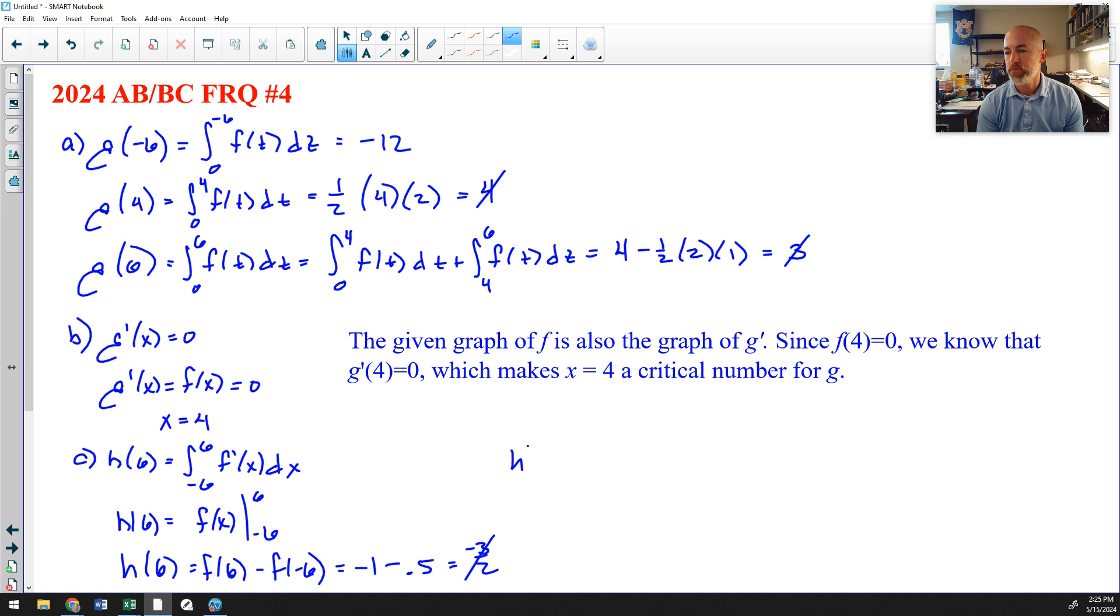On to H prime of six. First, I need H prime of X, which would be, you do the integral, use the fundamental theorem of calculus, and the derivative of H of X, you substitute the X in for the T times the derivative of what you substituted. You always multiply by the derivative of what replaces the T when you do that derivative of an integral defined function. And so that means H prime of six is going to be F prime of six. F prime of six right here. I'm looking over here. That is a line. The slope of that line is, I guess I'll show a little bit of work. It goes through the point six, negative one, and also through the point zero, two. So if I do the slope from zero, two, to six, negative one, that would be negative one minus two over six minus zero, which would be negative one half. Again, no need to simplify that.